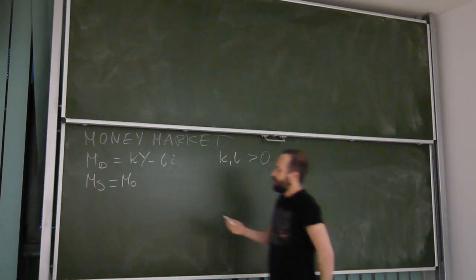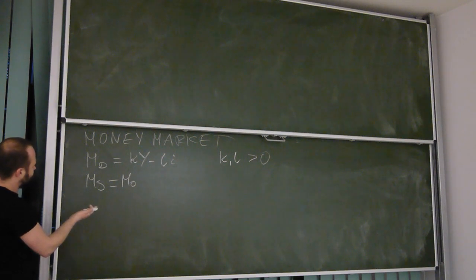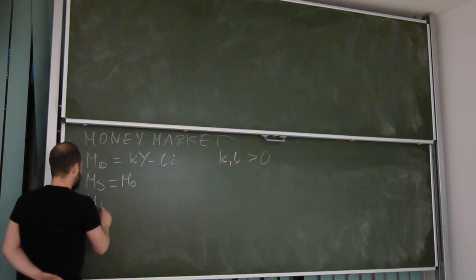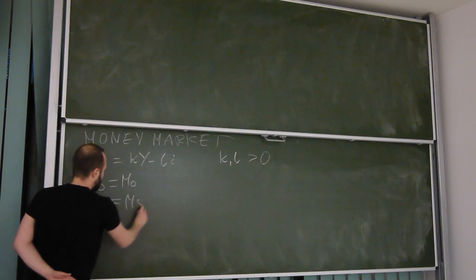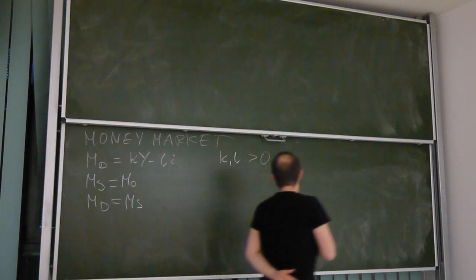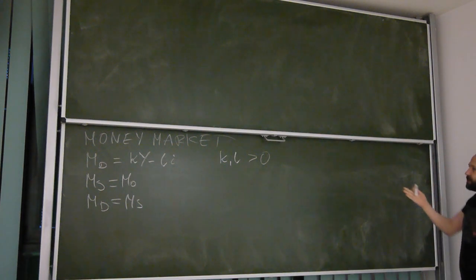So the bigger is the interest rate, the higher is the cost of maintaining money in form of cash. Okay, so in this case we can also assume that L is bigger than zero. So we have two equations: equation for demand, equation for supply, and we need equilibrium condition - money demand equals money supply.